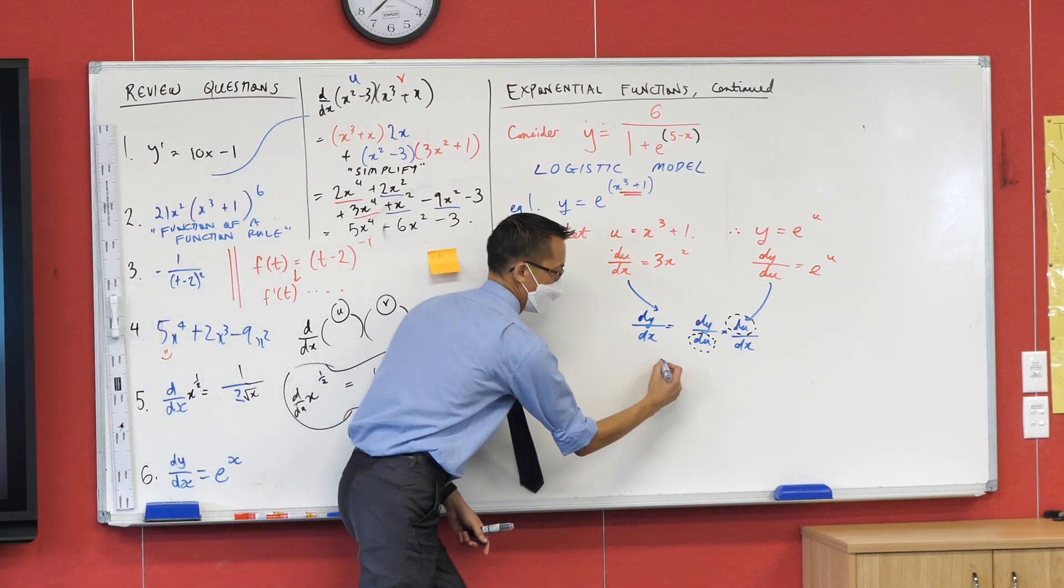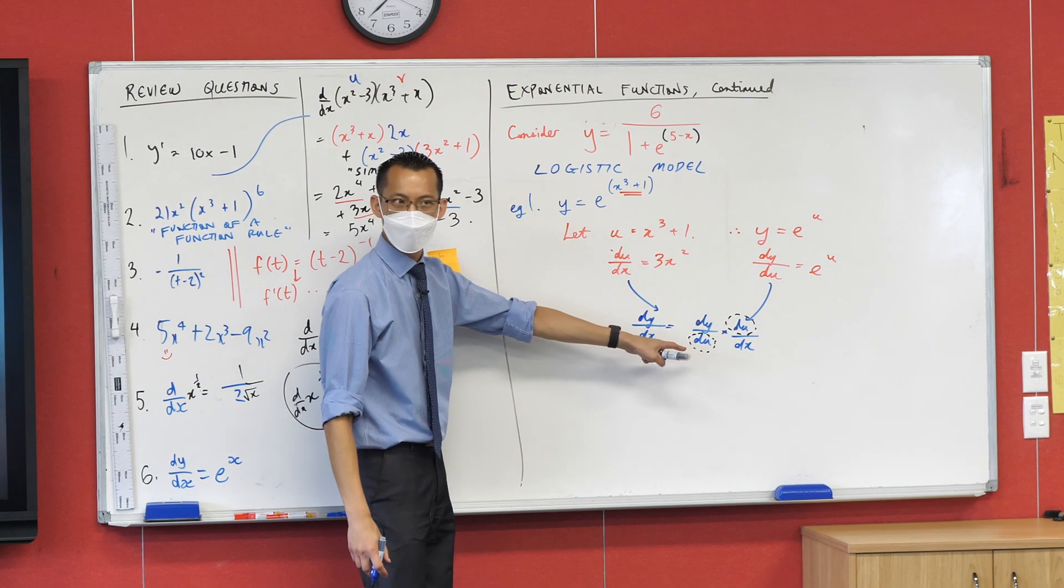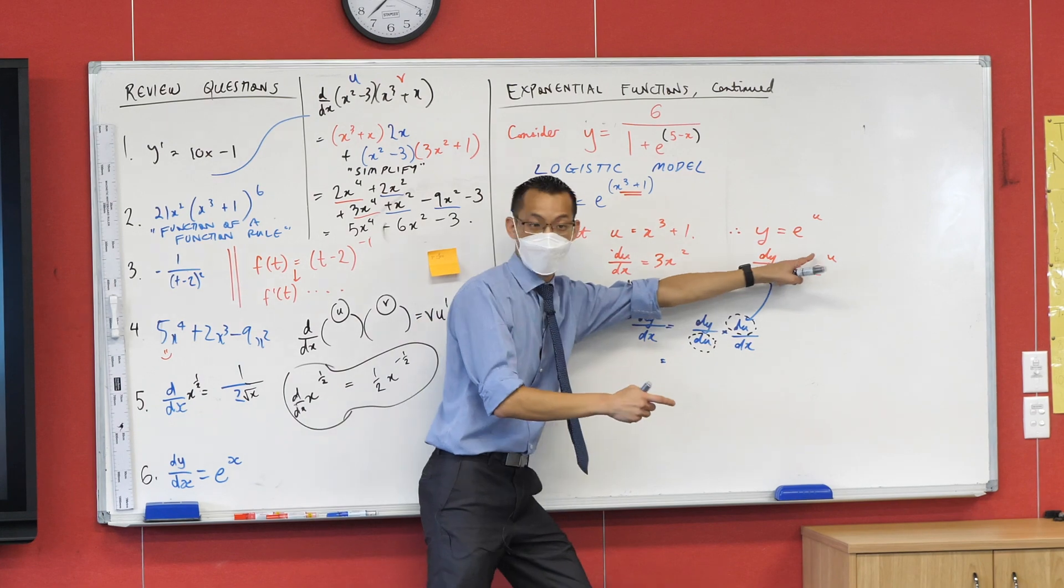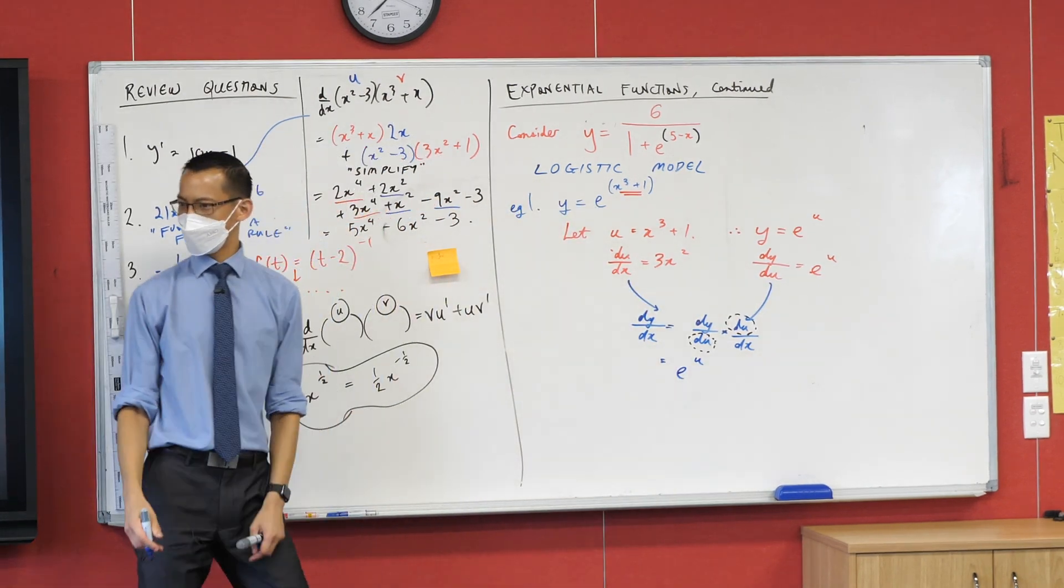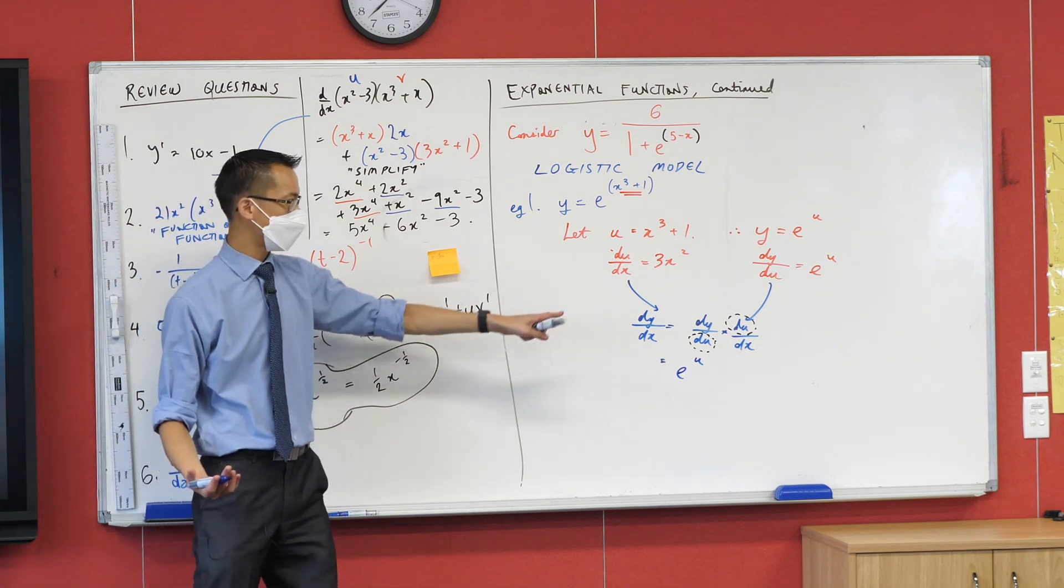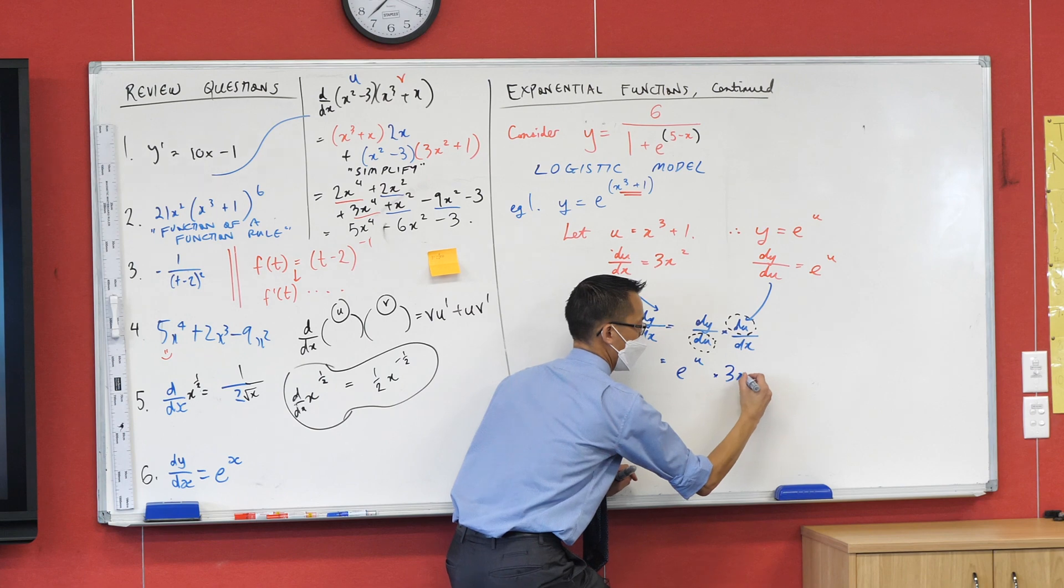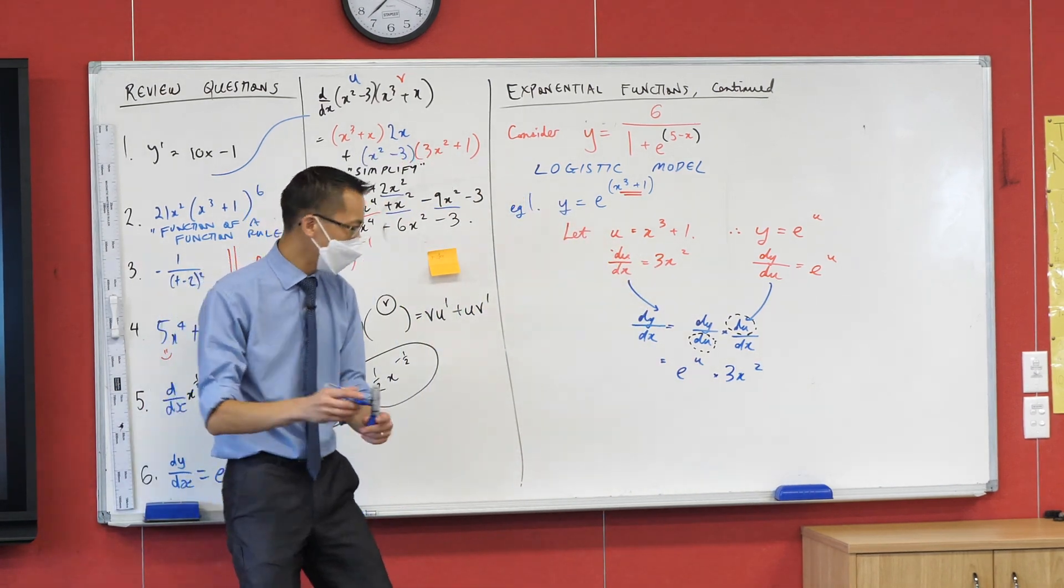So let's just put them together, I guess. What did we say dy/du was again? It's on the board. e to the power of u. So I'll just jot that down. What did we work out du/dx was? 3x squared. So I'll just multiply there. And at this point I'm pretty much finished.